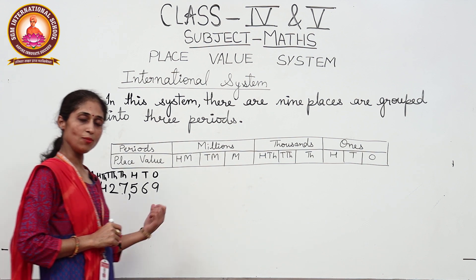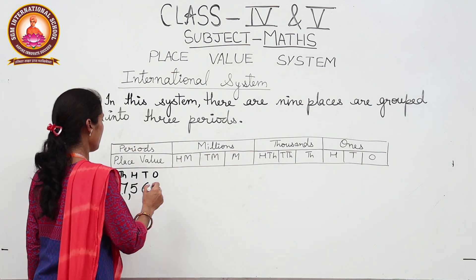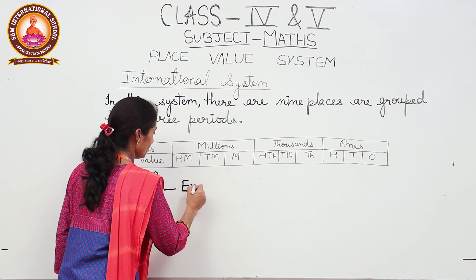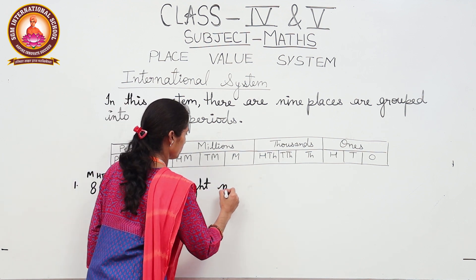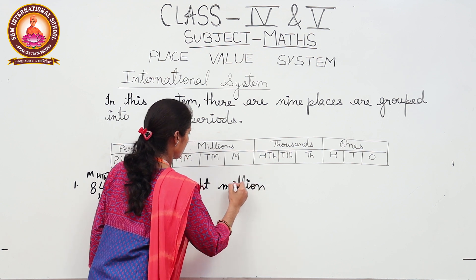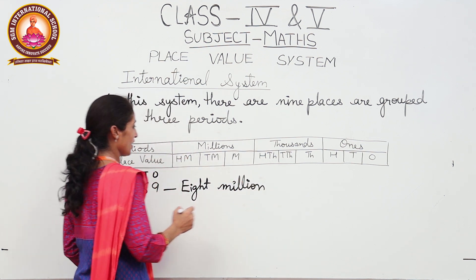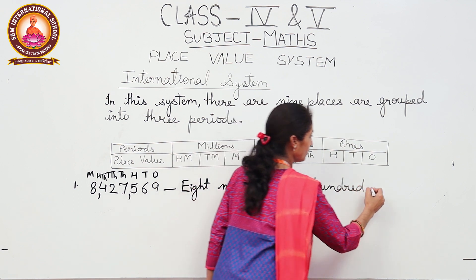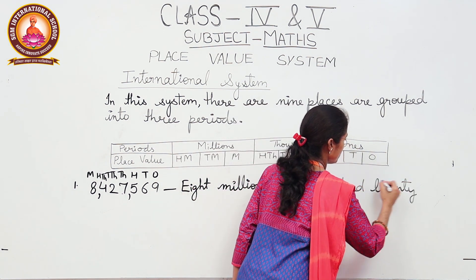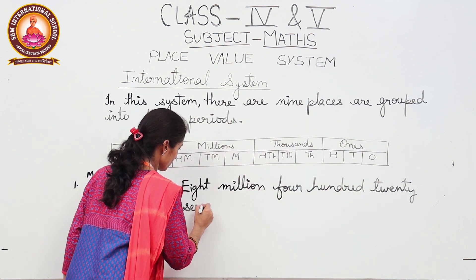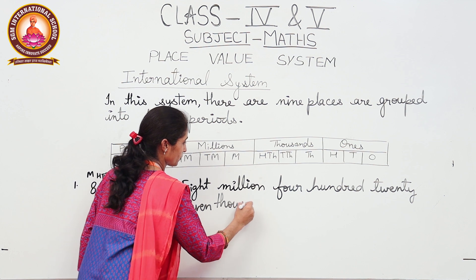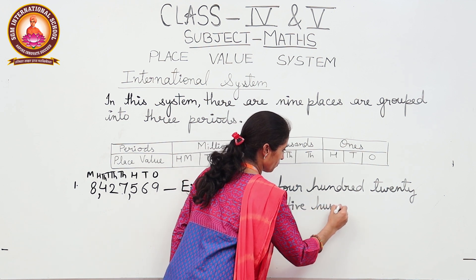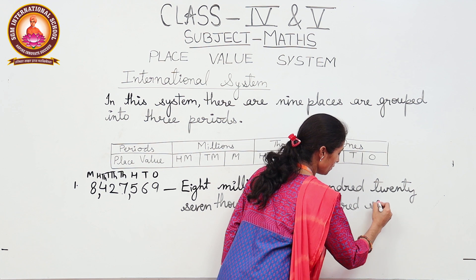Eight is at the millions place. For writing the number name, we start from the left side: eight million four hundred twenty-seven thousand five hundred sixty-nine.